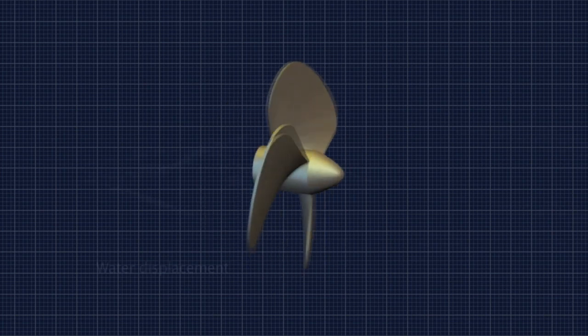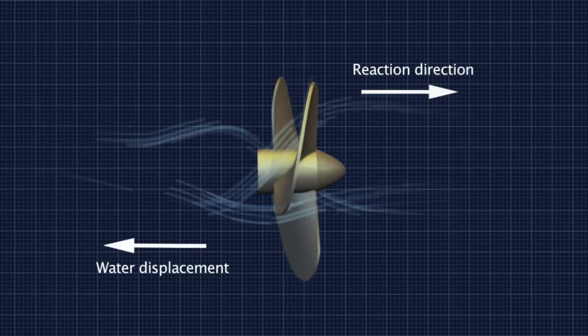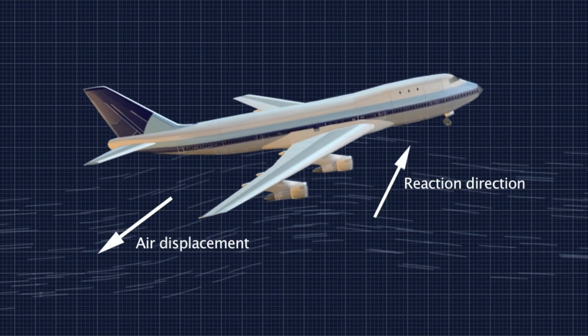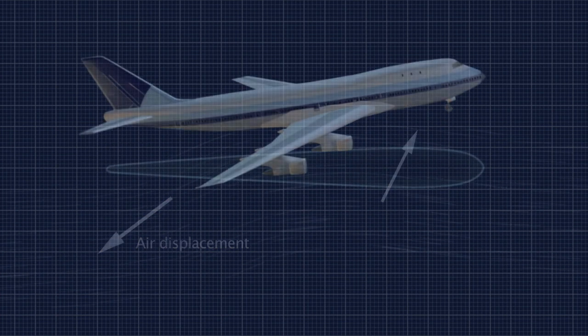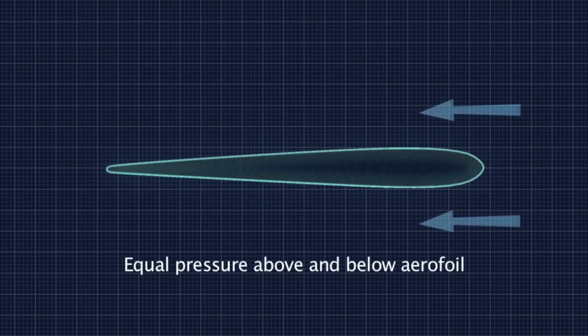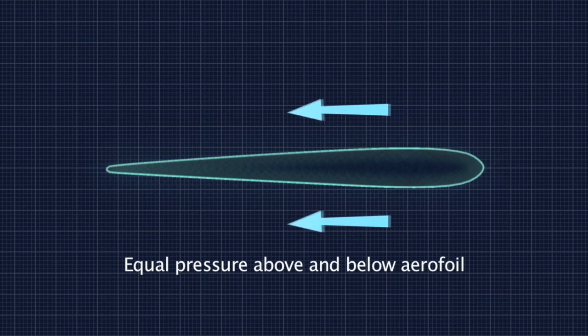Marine propellers achieve propulsion by using their angled blades to generate thrust. It's much the same principle that an airplane adopts to generate lift. If an aerofoil has no angle, the pressures are equal above and below it. In this case, a boat will have no thrust, and an aircraft will have no lift.